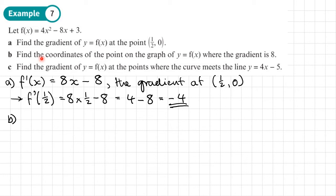Part b, find the coordinates of any point on the graph y equals f of x where the gradient is 8. So the gradient is going to be 8 where f dash of x equals 8. So that means when 8x minus 8 equals 8. So we would add 8 to both sides. So we get 8x equals 16. And that will give us the value x equals 2. So this is the x coordinate where the gradient is 8. We want the coordinates. So we need the y coordinate as well. And how do we find the y coordinate? We put it into here.